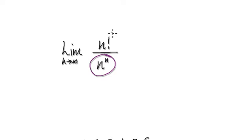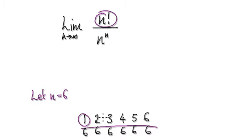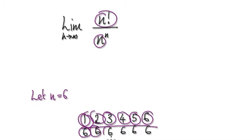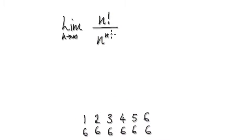You should know that n to the n will be a lot bigger than n factorial as n tends to infinity. But let's just pretend you forgot. Any time you forget, write it like this. Let n equal 6. So n factorial would be 6 times 5 times 4 times 3 times 2 times 1. And n to the 6 means you get 6 multiplied by itself 6 times. Clearly you can see that the denominator will be a lot bigger than the numerator — let's say n is 100 and you can see that. So you should be able to accept that the limit of this equals zero.